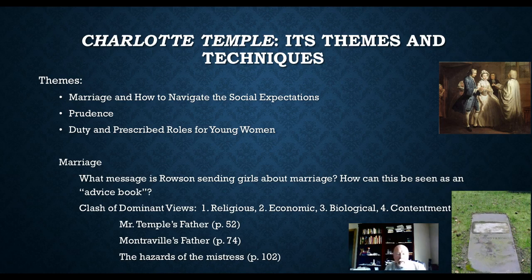We're going to talk about marriage and what Rowson seems to be offering, which is some sort of handbook on how to navigate the social expectations around marriage. Then we're going to talk about the theme of prudence — prudence, benevolence, those kinds of things, sentiment. And then the duty and prescribed roles for young women, because this is a novel about trying to get through life as a young woman while still having a sense of social respectability and being able to fulfill your duties, but at the same time offering at least some voice about how to achieve some sense of happiness and self-determination in life.